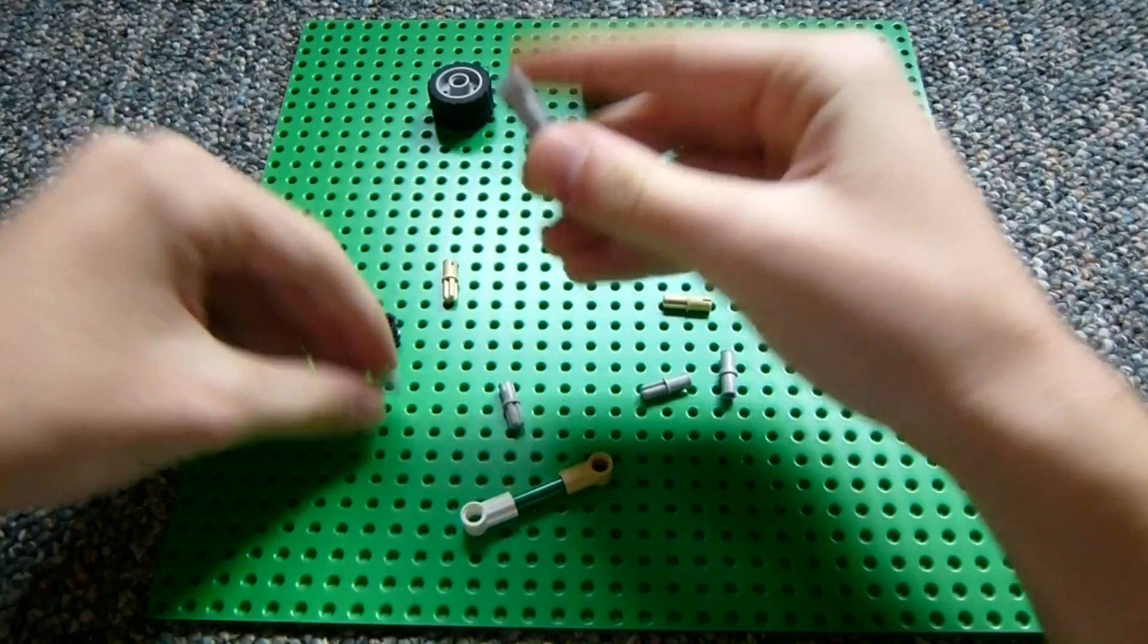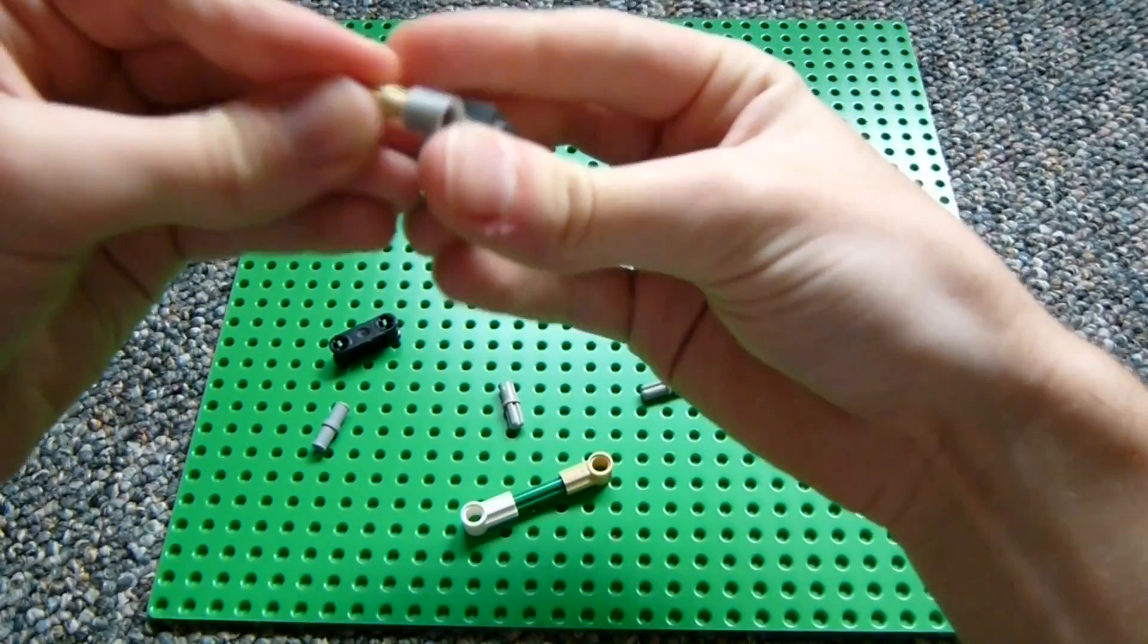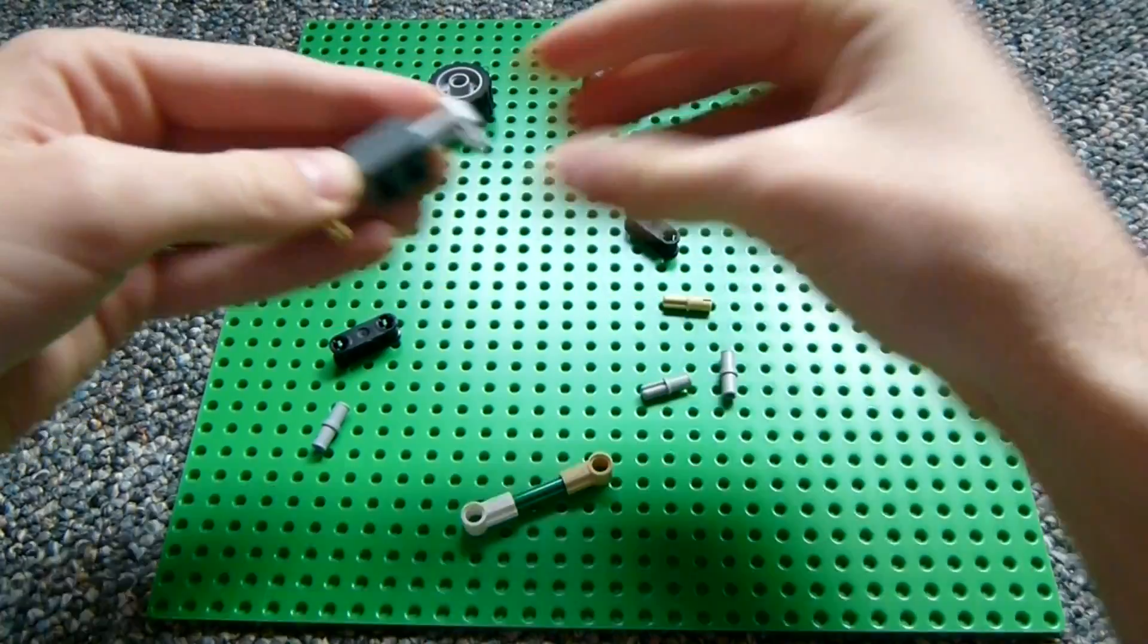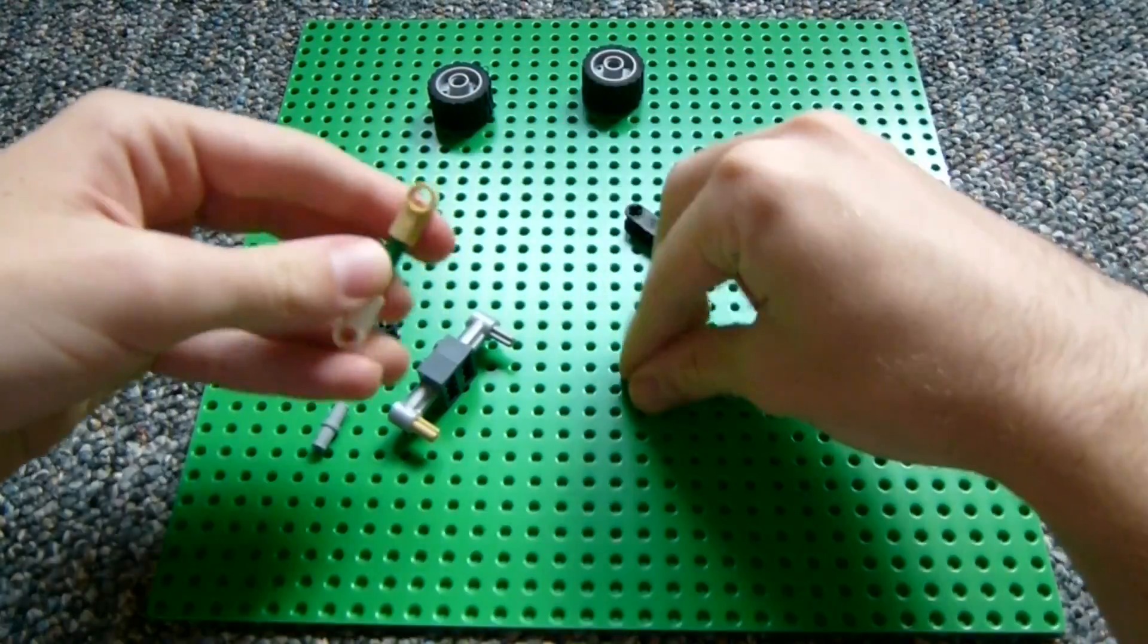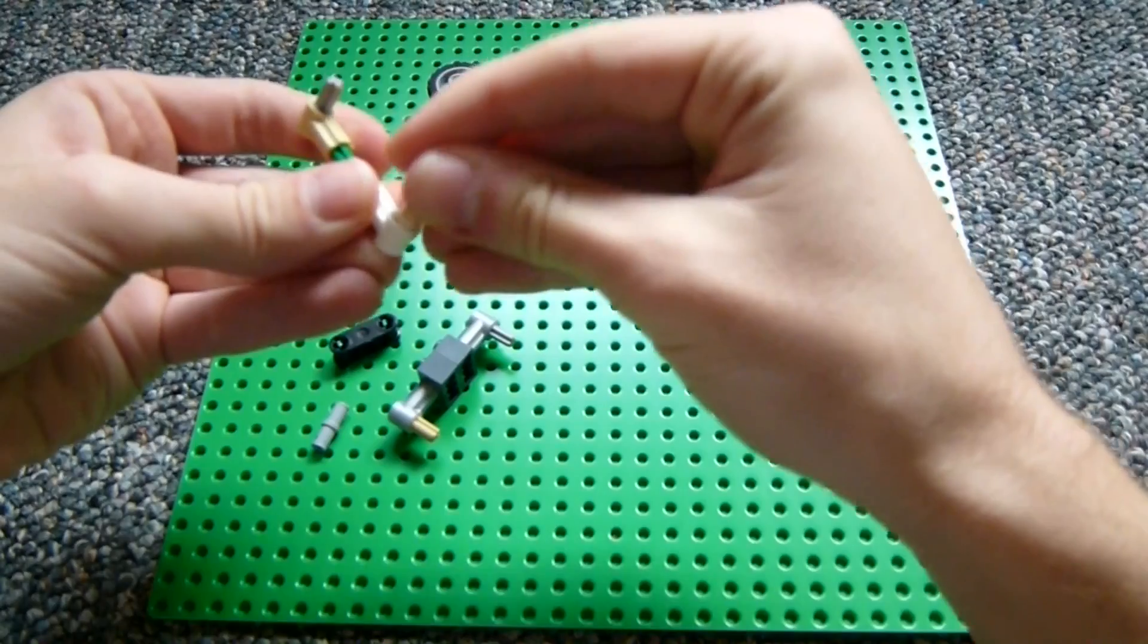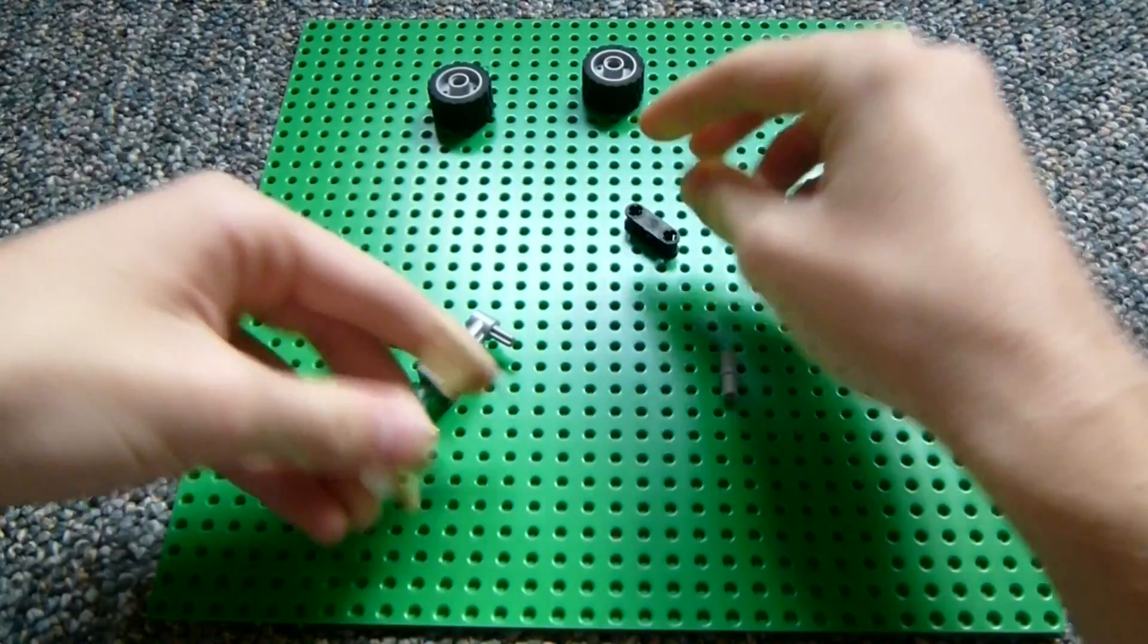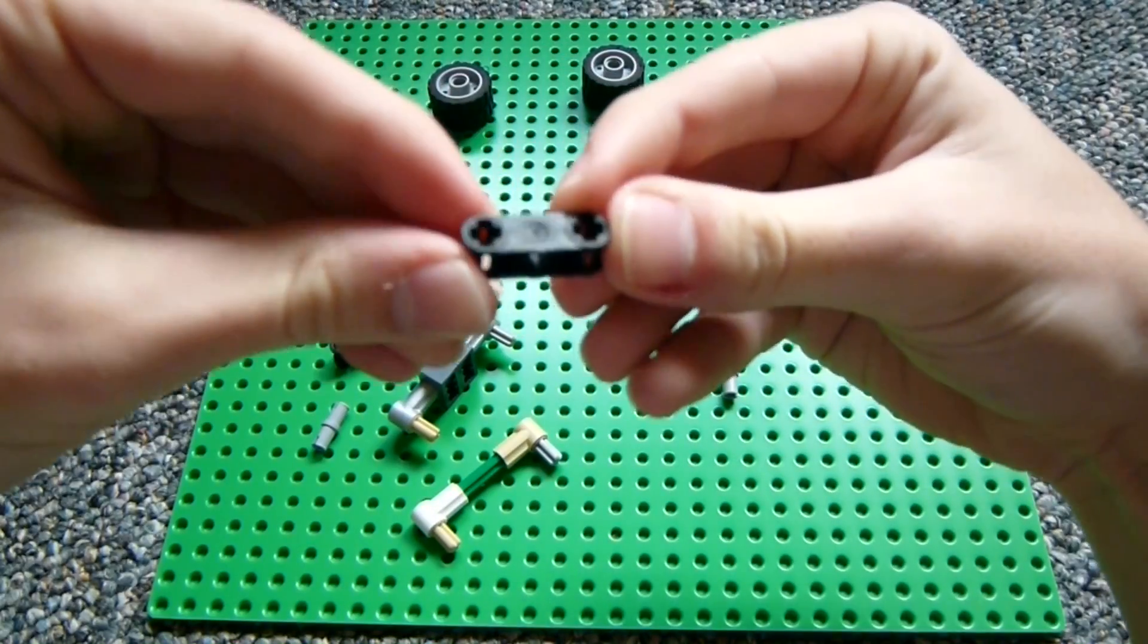And then in each of these, in the bottom, stick a half-rod, half-pin. And then what we'll do is we'll connect these using these kinds of pieces.